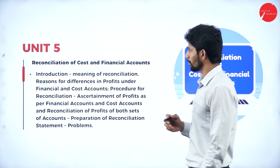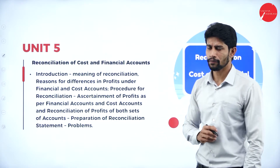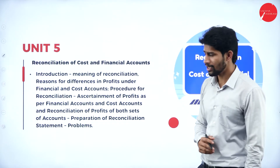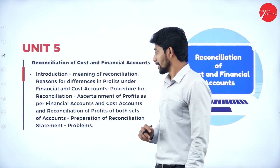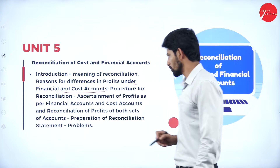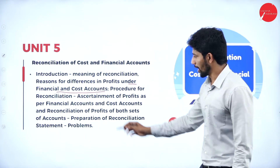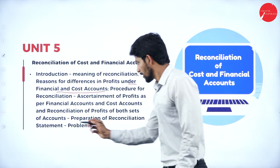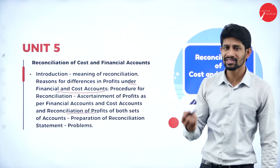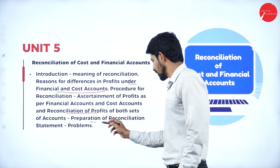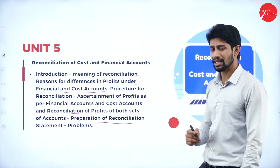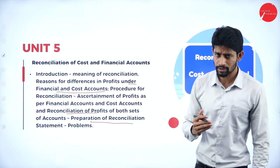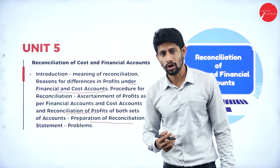Unit Five is all about reconciliation of cost and financial accounts. This covers the meaning of reconciliation, reasons for differences in profit under financial and cost accounts, the procedure for reconciliation of profit, reconciliation of profits from both sets of accounts, and preparation of a reconciliation statement. We will also solve problems based on the reconciliation statement of cost accounts and financial accounts.